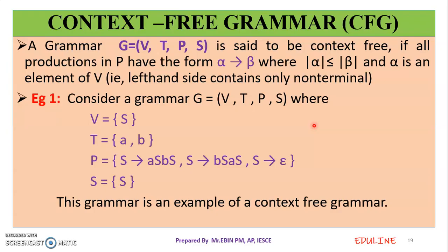We will define grammar. Grammar G is equal to V, T, P, S. V is a set of variables, that is non-terminals. T is a set of terminals. P is a set of production rules. S is a start symbol.